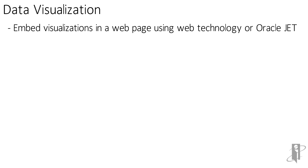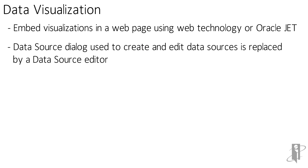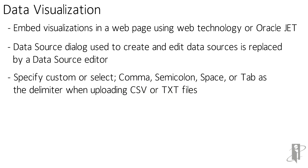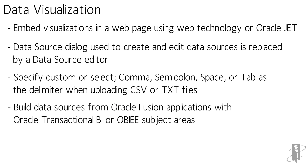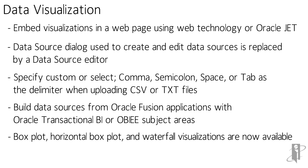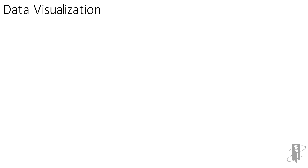You can embed visualizations in a web page using web technology. The data source dialog used to create and edit data sources is replaced by a data source editor. You can specify custom or select a comma, semicolon, space, or tab as a delimiter when uploading CSV or text files, build data sources from Oracle Fusion Applications with Oracle Transaction BI or OBIEE subject areas, and there are new box plot, horizontal box plot, and waterfall visualizations added.